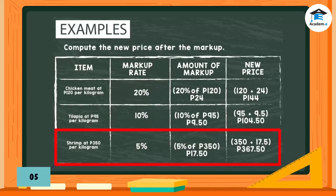Item: shrimp at 350 pesos per kilogram. Markup rate: 5%. Amount of markup: 5% of 350 pesos = 17 pesos and 50 centavos. New price: 350 pesos + 17 pesos and 50 centavos = 367 pesos and 50 centavos.